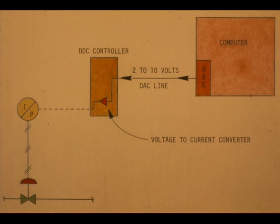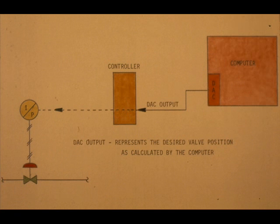A DDC controller receives the DAC signal from the computer and converts the DAC voltage to a proportional output current. The DAC signal, or computer output, represents the valve position the computer has calculated as being optimum for maintaining the desired process value.